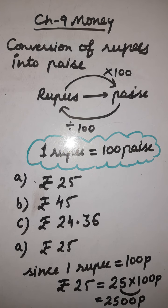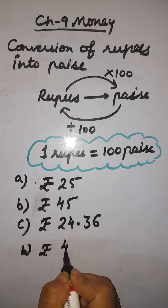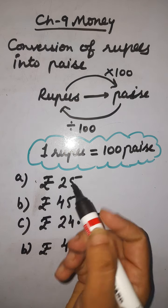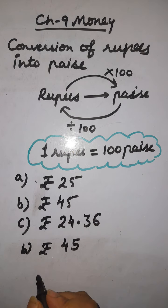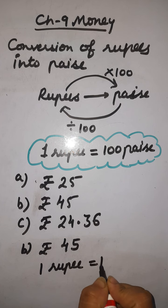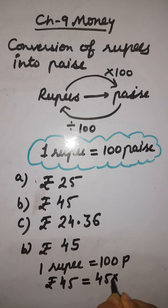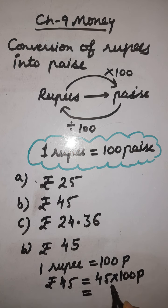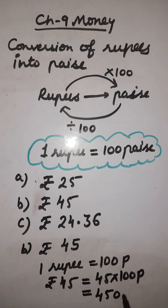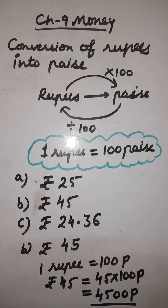The next example is rupees 45. Like above, the rule is 1 rupee is equal to 100 paise. So rupees 45 equals 45 multiplied by 100 paise. The given amount is 45 — 45 ones are 45 — then we put two zeros. It means that rupees 45, if we convert this into paise, we get 4500 paise.